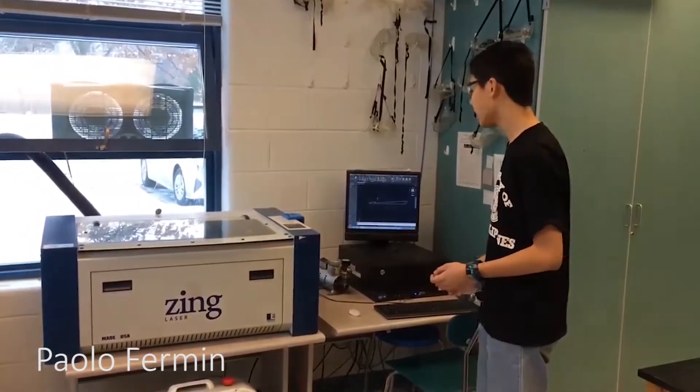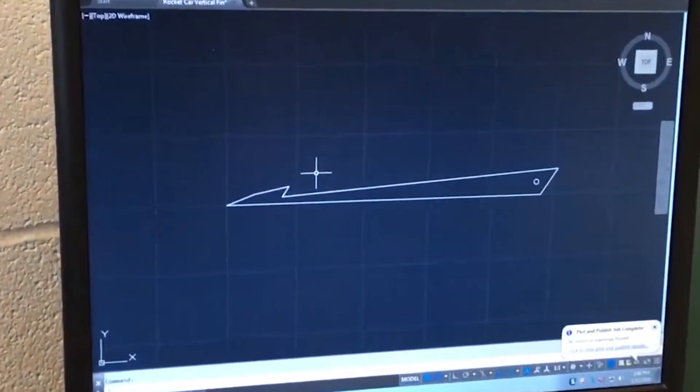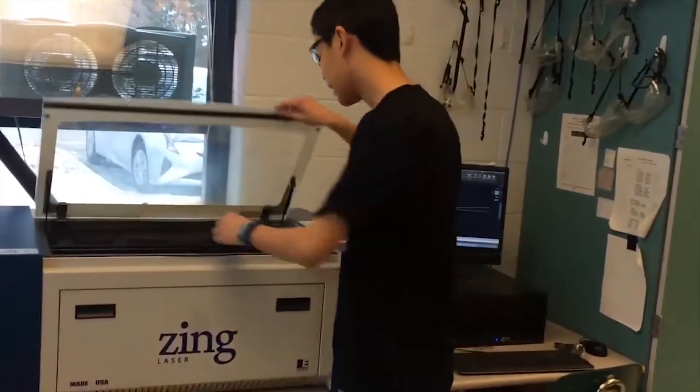I used the laser cutter to make a lot of the parts of my rocket car, including the vertical fin. So what I did was I drew it out in AutoCAD, sent it to the laser cutter, changed the settings to suit the piece of wood that I needed, and here it is.